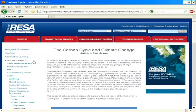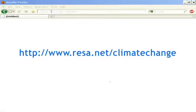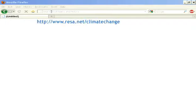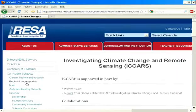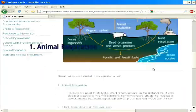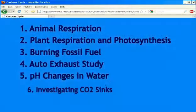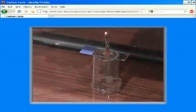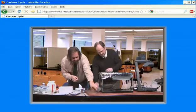This unit, the carbon cycle and climate change, is found on resa.net forward slash climate change. And you would click on the carbon cycle in the left-hand column. And everything that you see, the six activities that we're going to be doing, will be on that. And also the video clips for each activity.